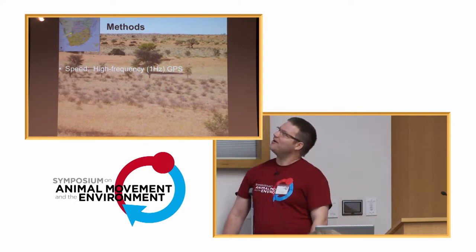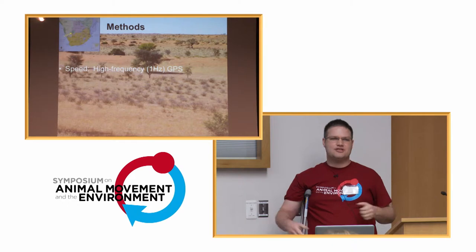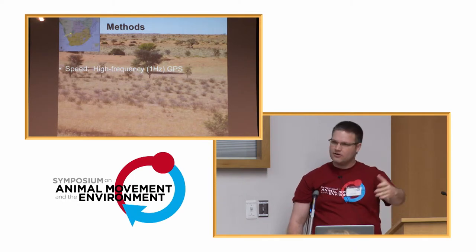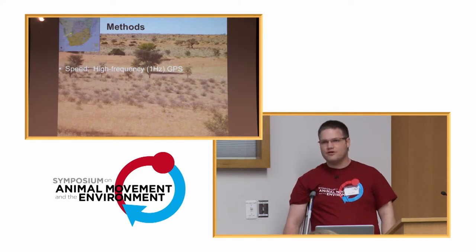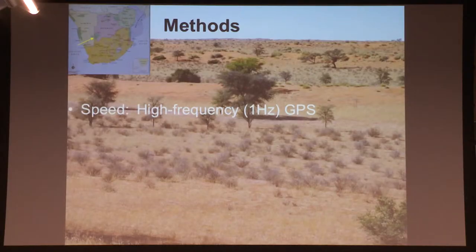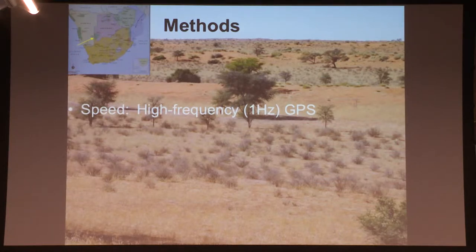I wanted to figure out how fast these cheetahs really run when they go after prey. I thought the Kalahari Desert is a really good place to do this — it's really open, big sky, so the satellites and GPS can really talk to one another. Especially on the riverbeds with their strong substrate, I think cheetahs can get up to good speed there when going after springbok.